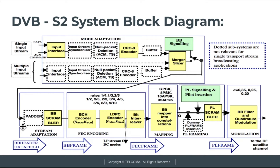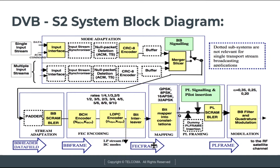The stream adaptation system consists of a padder and BB scrambler. A BB header data field is formed after stream adaptation. Next, FEC encoding is done where the signal passes through the BCH encoder, then the LDPC encoder, and then through the bit interleaver. The BB frame passes through this encoder chain and forms a FEC frame.